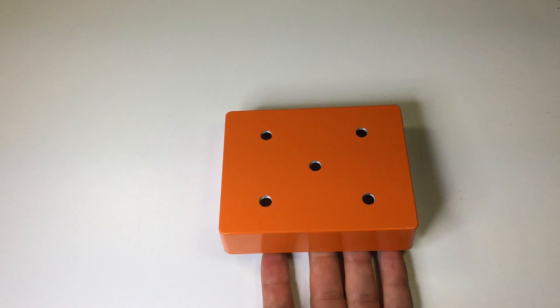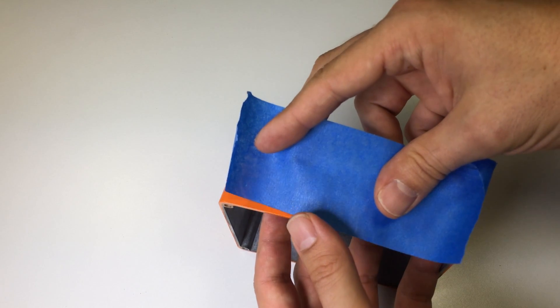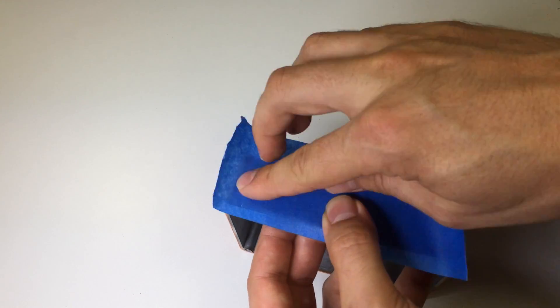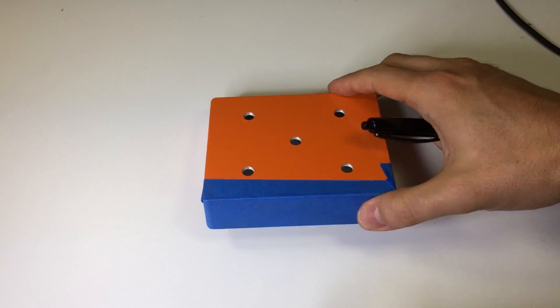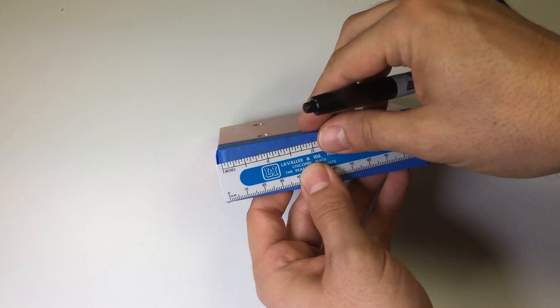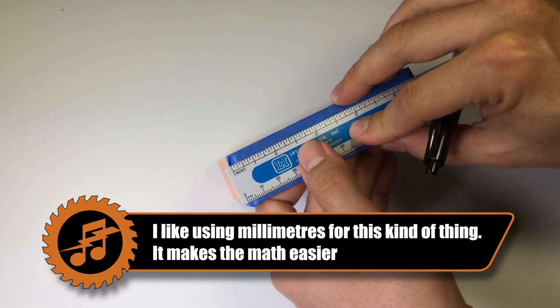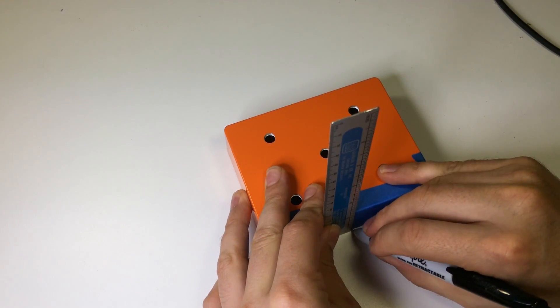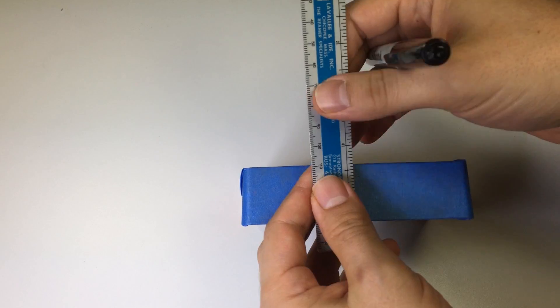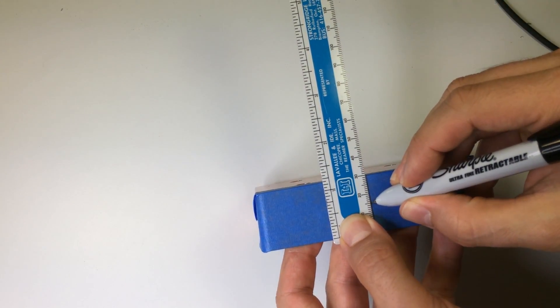Now, we'll drill the back of the enclosure for the audio jack and power plug. Start by covering the back of the box with some masking tape. The audio jack will go directly in the center of the back of the case. Take a ruler and measure the length of this side. Divide this number in half and find the midpoint of the case and make a mark. Now, measure the height of the case. Divide that number in half and mark the center.